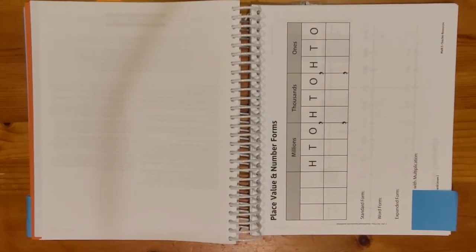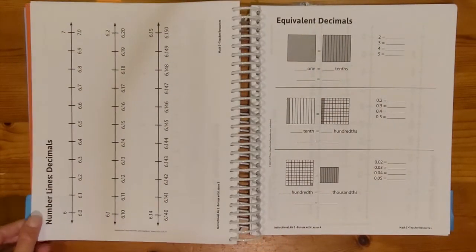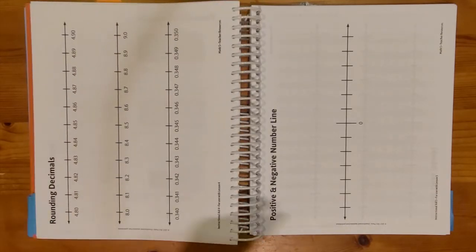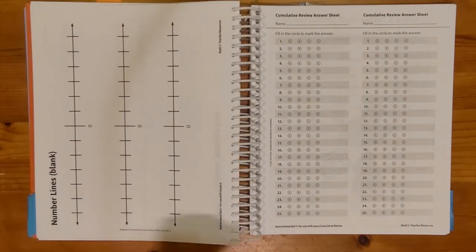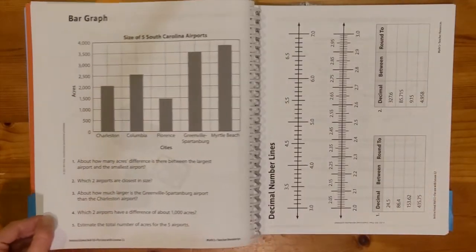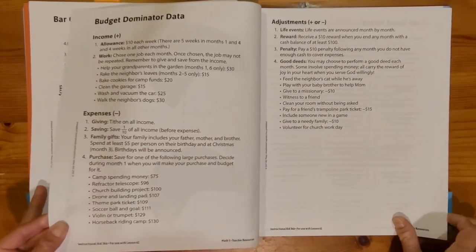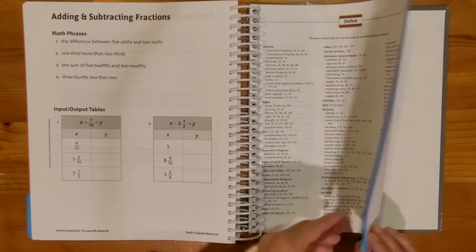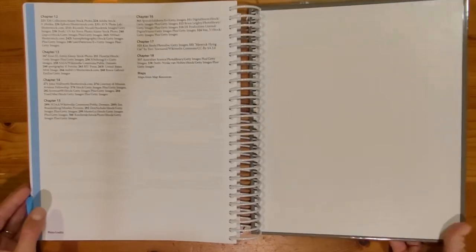Flipping to the back of the book, I do have some teacher resources. These are pages that I can make copies of to use while I am teaching the lesson, and then that way my child could write on it as we're working out examples. And then at the back of the book, I have my index. So if there was a topic we needed to review, I could quickly find that topic and then do a quick review with it. So that is my teacher edition for Math 5.